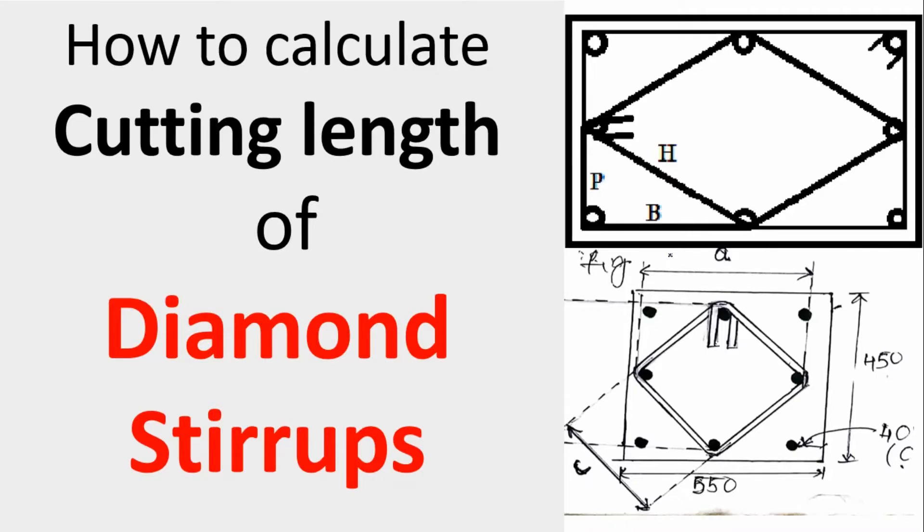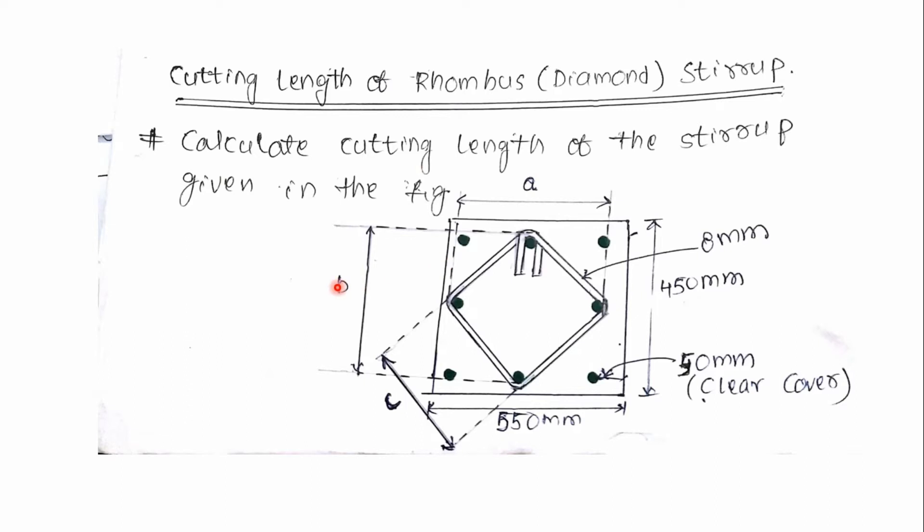Hey guys, welcome to my channel. In this video we will see how to calculate the cutting length of a diamond stirrup. Calculate the cutting length of the stirrup given in the figure. Here a column of 550 by 450 mm is given, and the stirrup is 8 mm with clear cover of 50 mm.